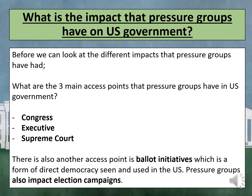Before we look at the different impacts that pressure groups have had, we need to think about the three main access points that pressure groups have in US government. They are Congress, the Executive, and the Supreme Court. There is also another access point, which is ballot initiatives — a form of direct democracy used in the US. Pressure groups also have an impact on election campaigns.